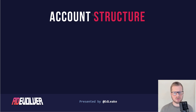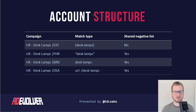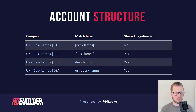Another thing we should quickly cover is account structure to make this work. This is just an example — you don't have to use this — but in order for your single keyword ad groups to work, they literally need to be exact matches in their own ad groups, no mixing and matching of match types. So this example shows a campaign targeting the UK for desk lamps, with campaigns for exact, phrase, broad, and DSA.